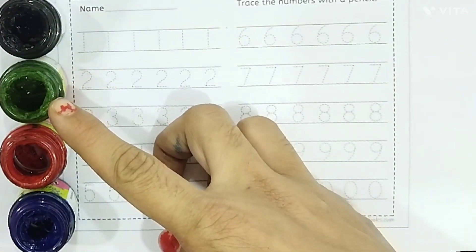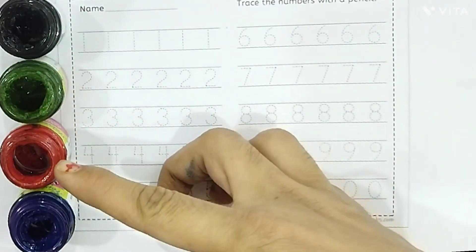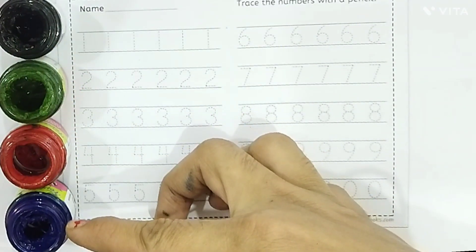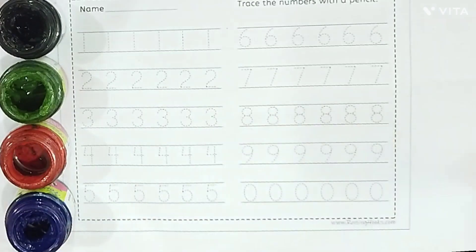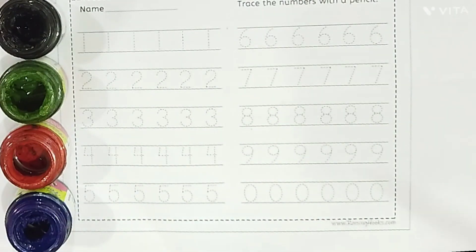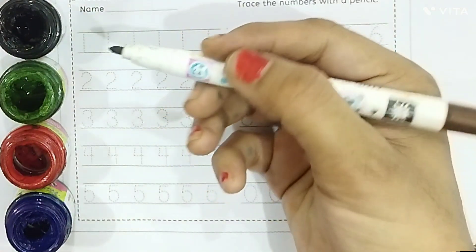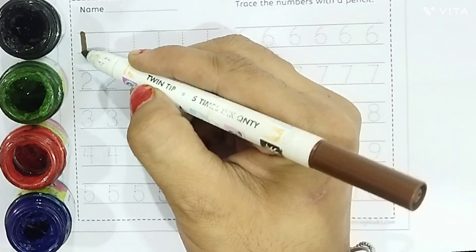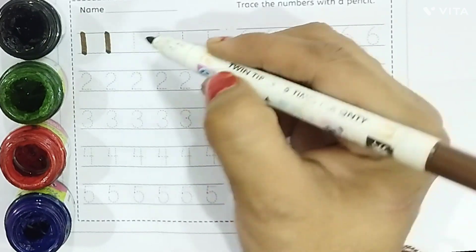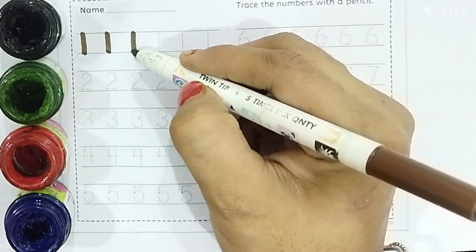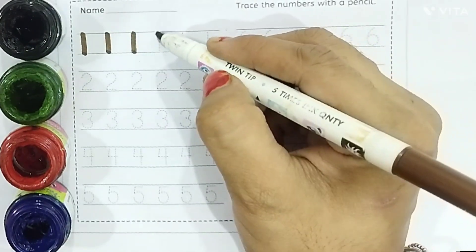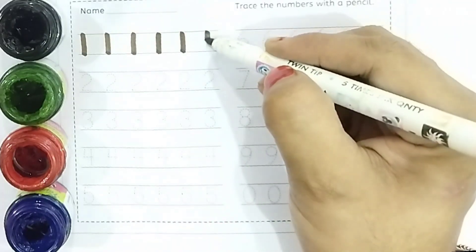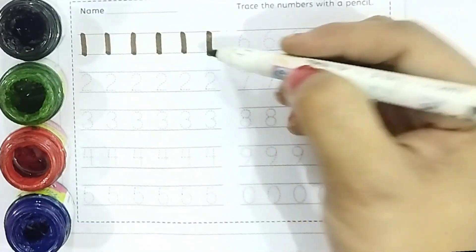Black color. Green color. Red color. Blue color. Brown color. One, one, one, one, one, one.